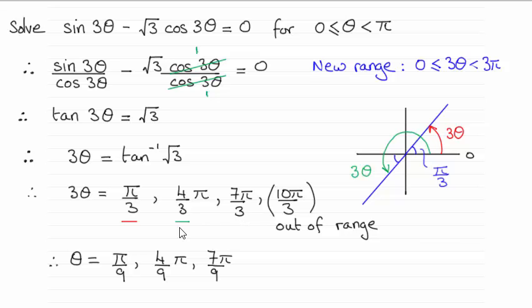Now we divide by three. And that gives us our three required answers. A ninth pi, four ninths pi, and seven ninths pi. So I hope that's given you some idea then on how to do that particular question.